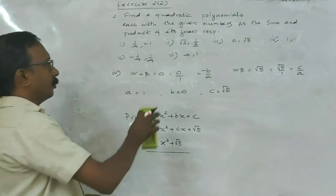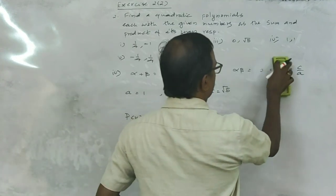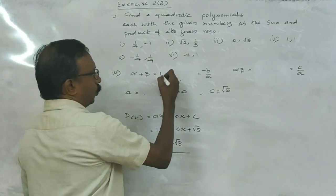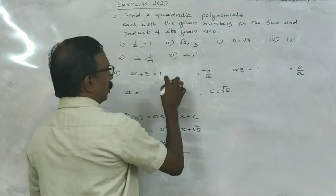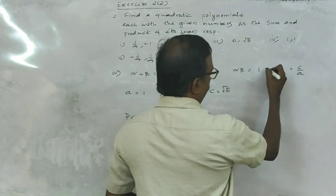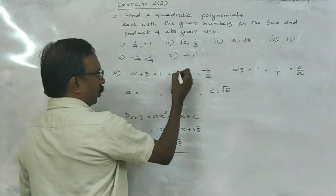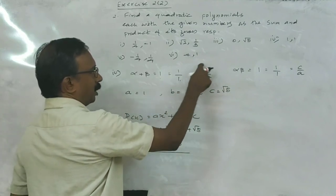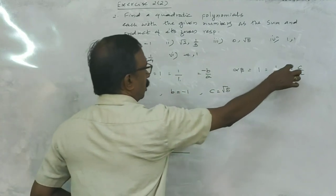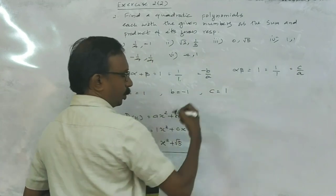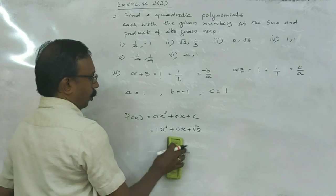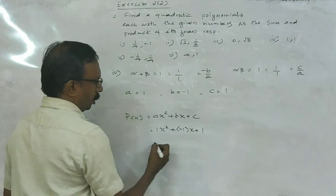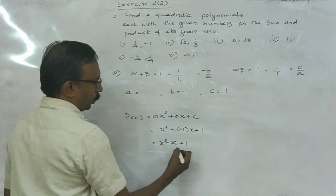Fourth question: alpha plus beta is 1 and alpha beta is 1. So 1 can be written as 1 by 1. So A equals 1, minus B equals 1 so B equals minus 1, C equals 1. Therefore the polynomial is X squared minus X plus 1, isn't it?